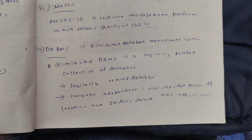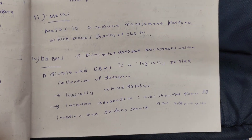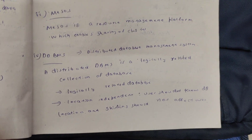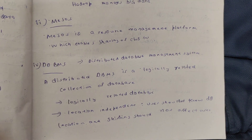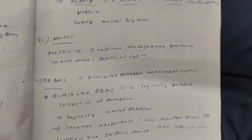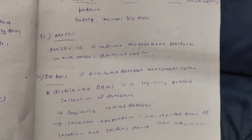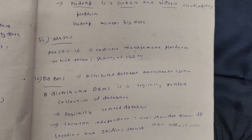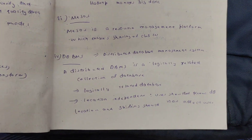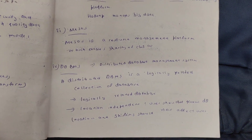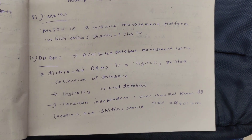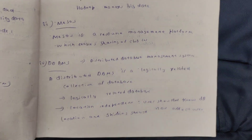Next, DDBMS — Distributed Database Management System. A Distributed Database Management System is a Logically Related Collection of Databases. This is a set of databases which is linked to the database, so it's distributed and available.